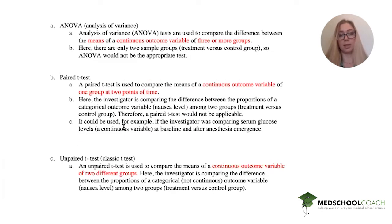An unpaired t-test, which is the classic t-test, compares continuous outcome variable means of two different groups. So, although here we have two different groups, here we have categorical variables and not continuous variables. So we can't use an unpaired t-test.